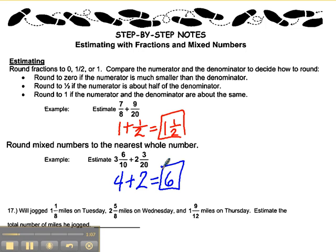In word problems, you might have one such as this. Will jogged 1 and 1 eighths miles on Tuesday, 2 and 5 eighths miles on Wednesday, and 1 and 9 twelfths miles on Thursday. Estimate the total number of miles he jogged. You are dealing with mixed numbers here, so you are going to round to the nearest whole number.